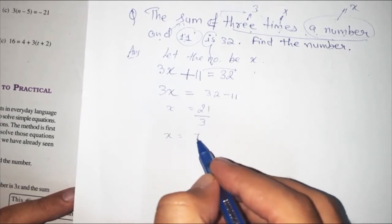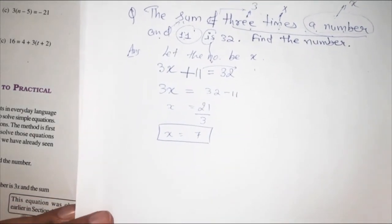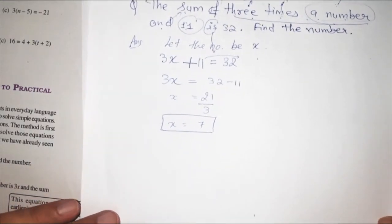21 divided by 3. So x equals to 7. So the number. One thing, the question was in statement form.